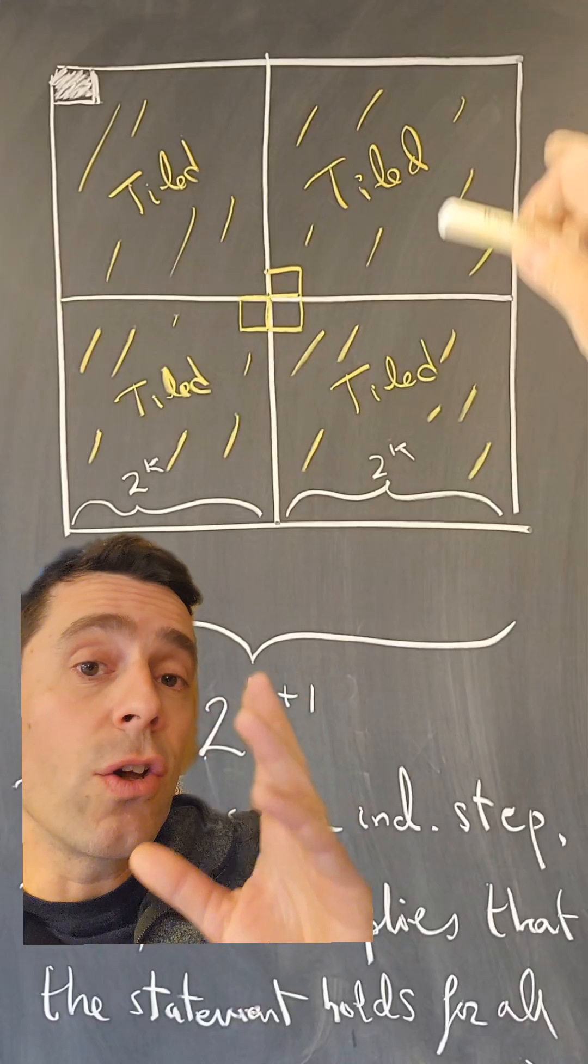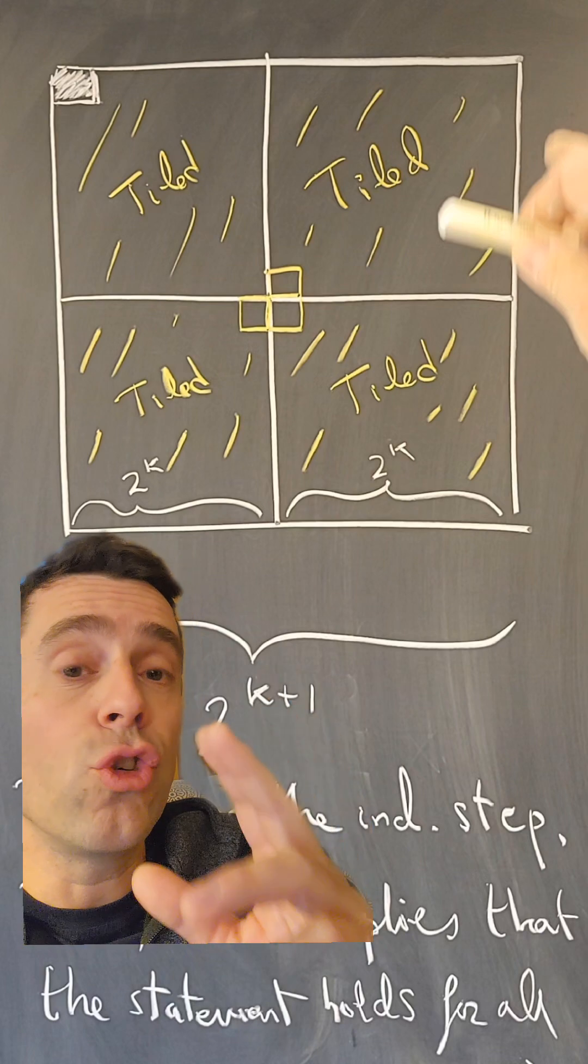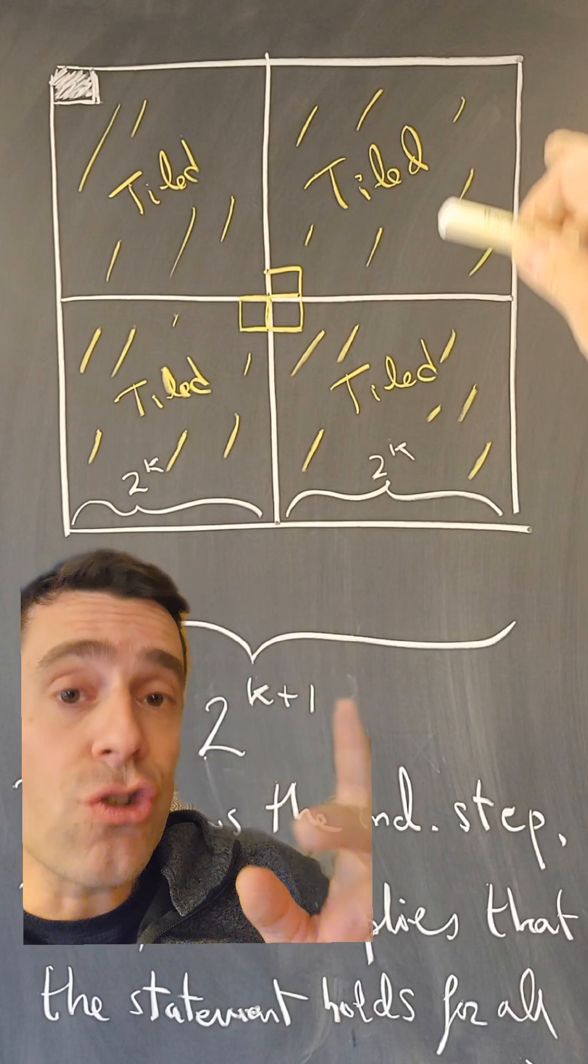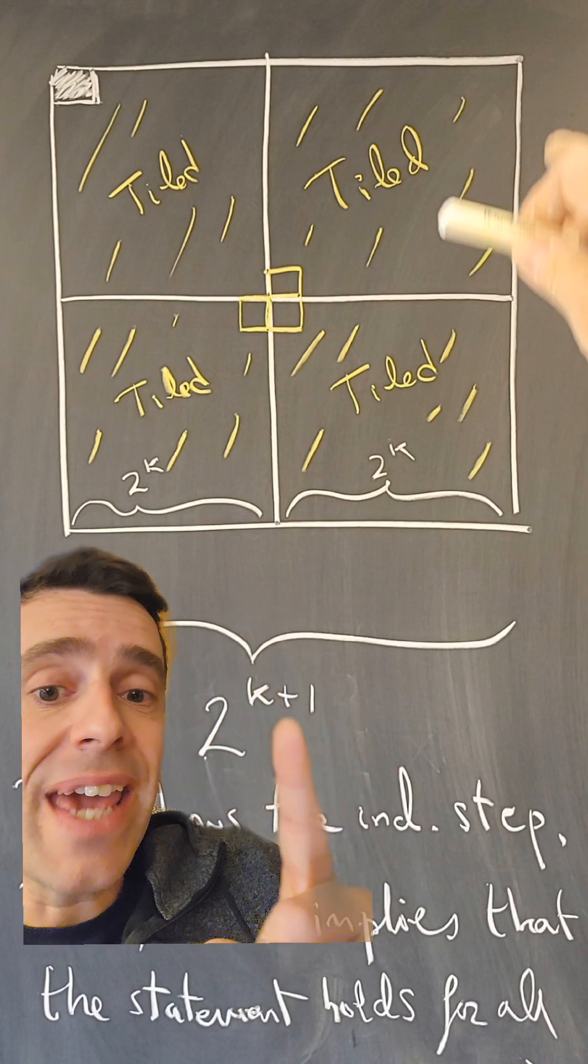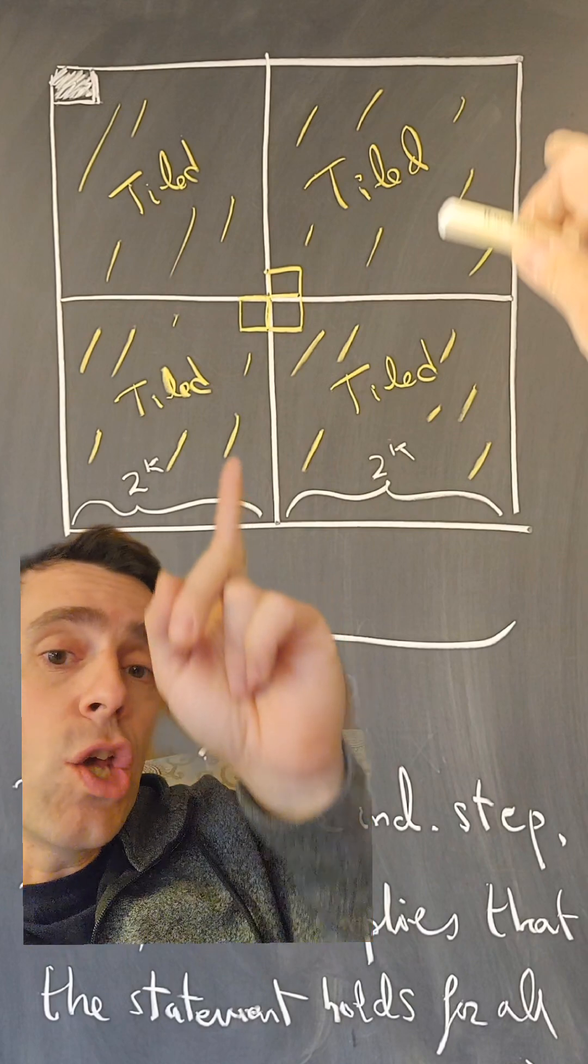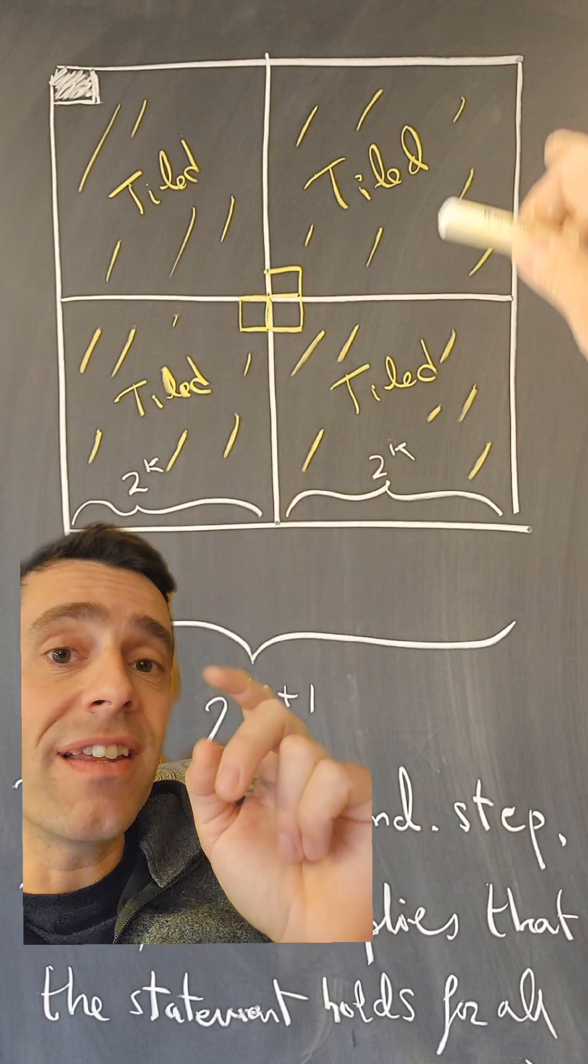The proof by induction very quickly goes like this. You first prove the 2 by 2 case, and then to prove the induction step, if you have a chessboard that is 2 to the k plus 1 in size, you divide it in four pieces, you put already one piece in the middle.